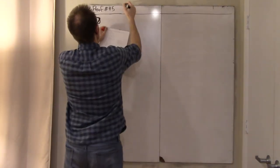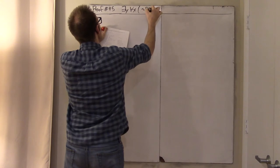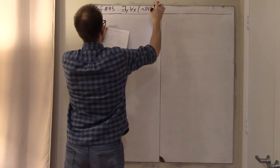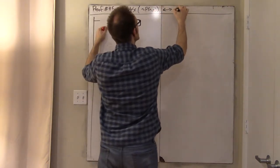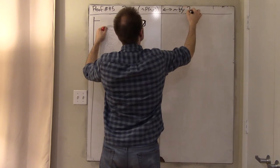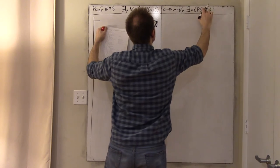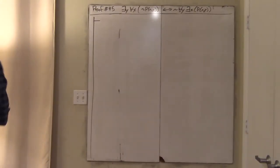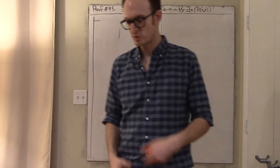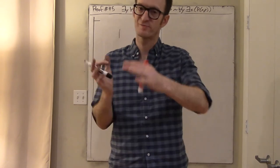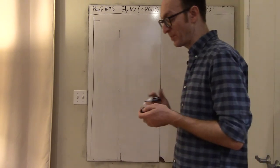Here it is: there exists a y such that for all x, not p of x, y — if and only if — not for all y, there exists an x, p of x, y. Here we have p as some kind of binary predicate. It's helpful to give it some kind of interpretation so we can talk about it. Let's make some nice active verb — like 'punched.' So p of x, y means x punched y.